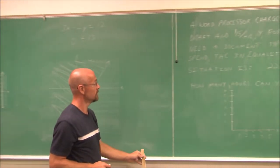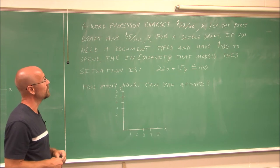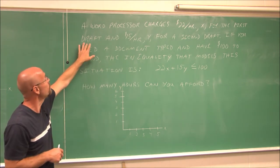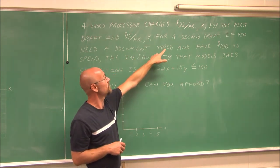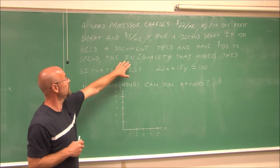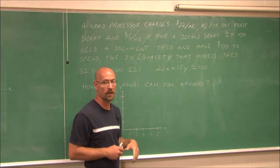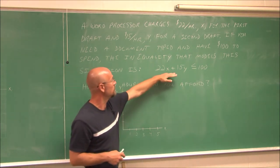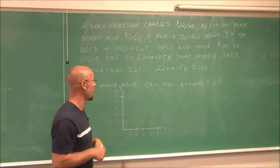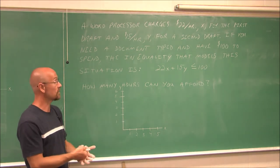Let's look at an application where we might see a linear inequality. A word processor charges $22 an hour (x) for the first draft of a document and $15 per hour (y) for a second draft. If you have $100 to spend, the inequality that models this situation is 22x plus 15y is less than or equal to 100. This looks like a linear equation. Since it can be equal to $100, I'm going to use a solid line when graphing it.